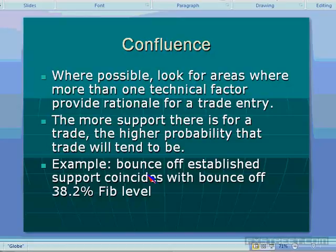Just as a side note, there's a site called pivotfarm.com — I'm not affiliated with it, but I know the person who runs it. Go take a look at what they have in terms of confluence. They're taking pivot points of all different types, Fibonacci levels, prior market turns, trend lines, and moving averages — putting it together and finding zones of confluence where bounces or breaks would have increased significance.